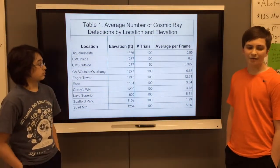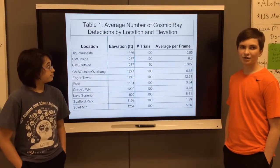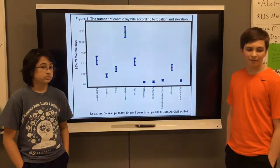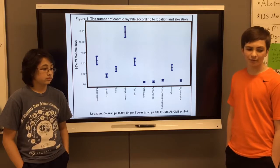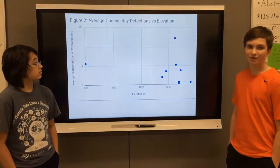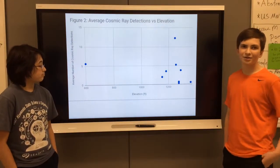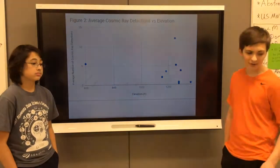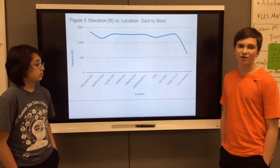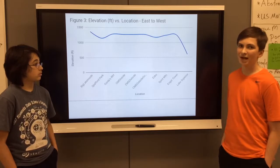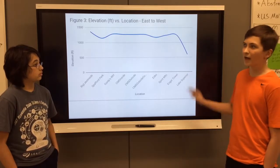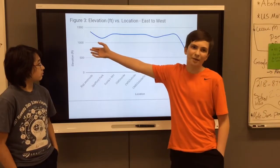Table one shows the average number of cosmic ray detections according to location and elevation. Figure one shows the average number of cosmic ray hits according to location and elevation. Figure two shows the average number of cosmic ray detections versus elevation. Figure three shows the elevation versus location from east to west — it's a side view of our collected data, with the low point being Lake Superior and all the way over here being around the Big Lake area.